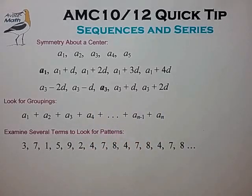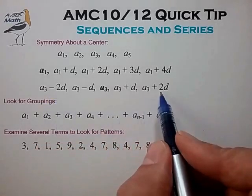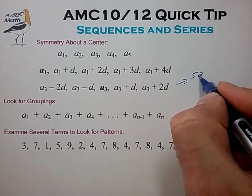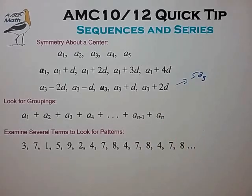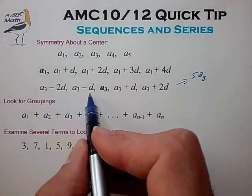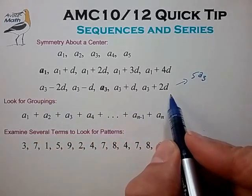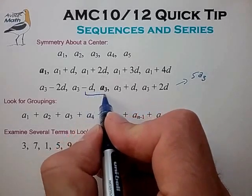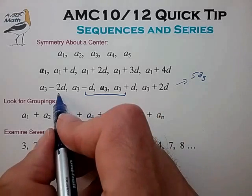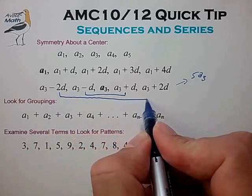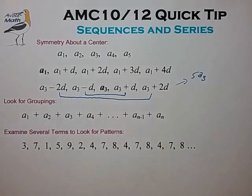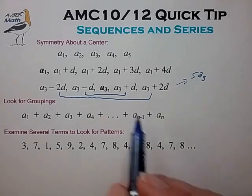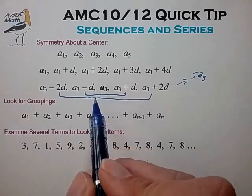When we do that, we notice a few immediate connections. One is that the sum of the terms is simply given by 5 times A3. So in effect, A3 is the average of the five terms. We also find that A3 is the average of any pair or any group of terms that is symmetric around the center term. So if you know the sum or the average of an arithmetic sequence, you immediately know the center term, and that's often useful in AMC problems.